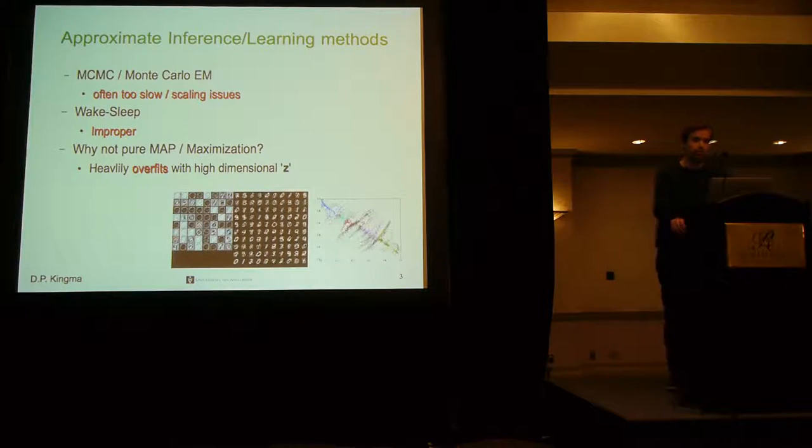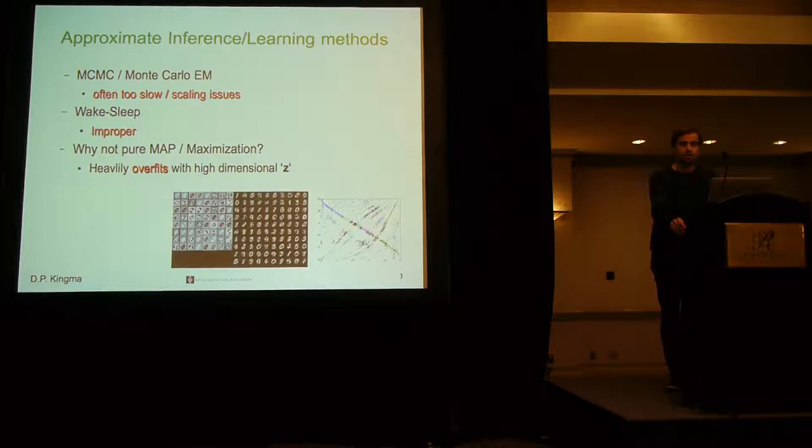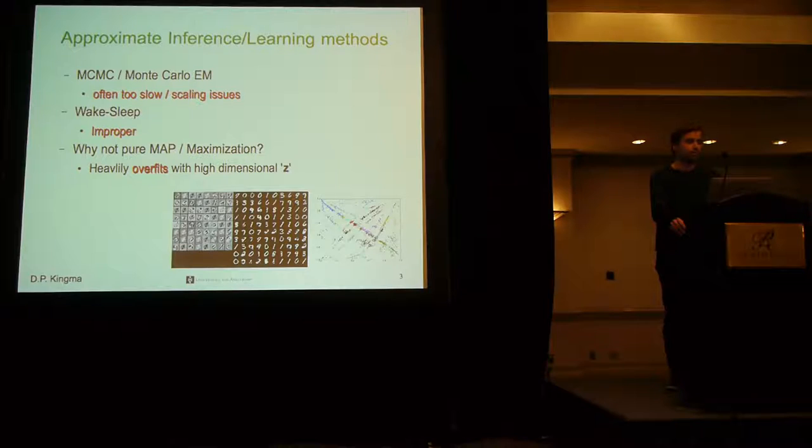For inference we could, for example, resort to sampling-based methods. We could run an MCMC chain over the latent variables per data point, then apply these MCMC samples into the EM update and then update parameters. However, because you need to run this MCMC chain per data point, this method can take quite long to converge, and you need to spend a lot of time per data point to infer this posterior.